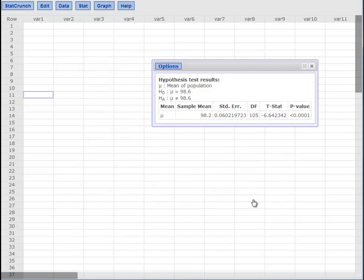We get our t statistic there of negative 6.642 and our p is less than 0.0001. That is what we are always going to see in technology when it is too small. If you rounded you would just have a bunch of zeros there and they would just tell you that it is less than 0.0001.